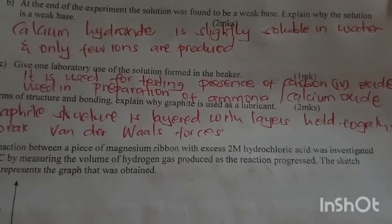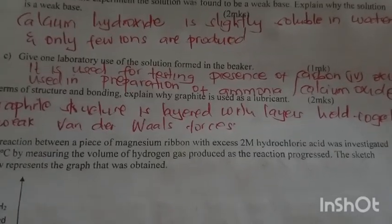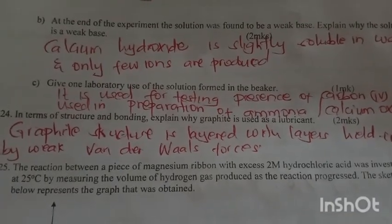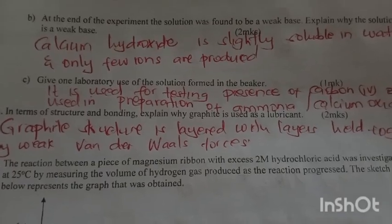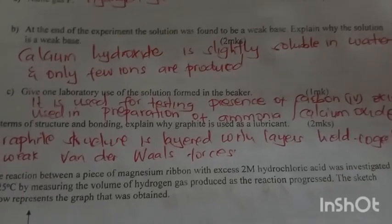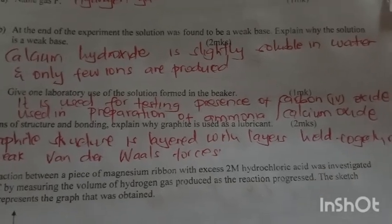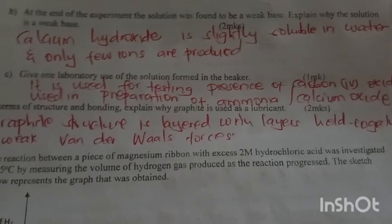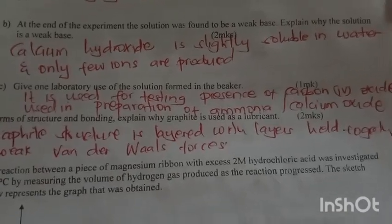In terms of structure and bonding, explain why graphite is used as a lubricant. Graphite structure has layers that are joined by weak van der Waals forces that slide over each other.